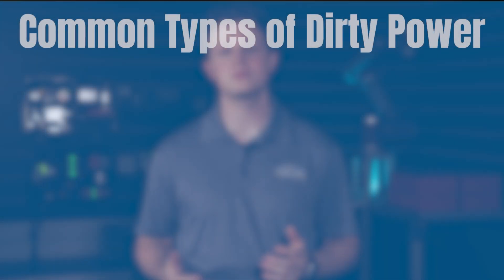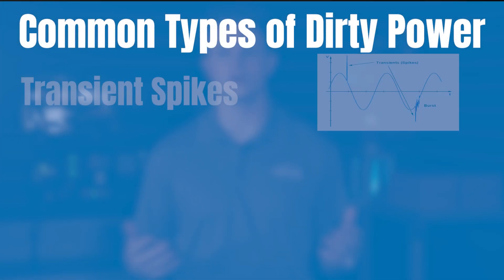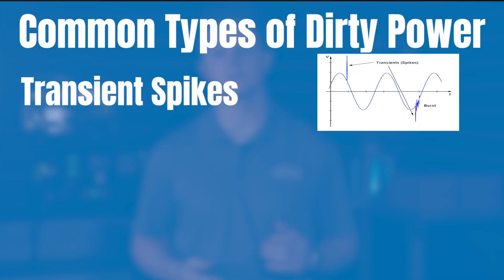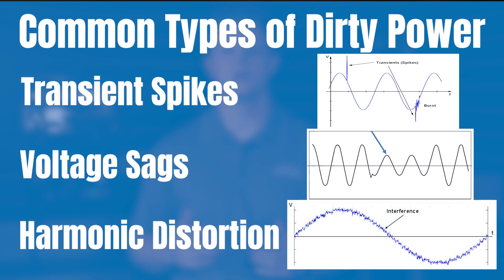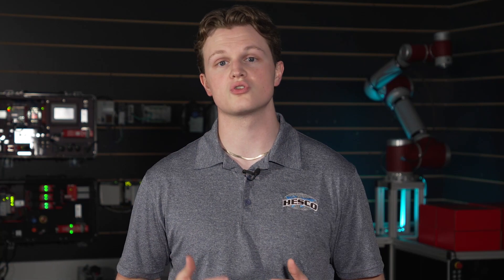Common types of dirty power are transient spikes, voltage sags, and harmonic distortion. These issues radiate out of the wiring and into your facility, causing various issues.